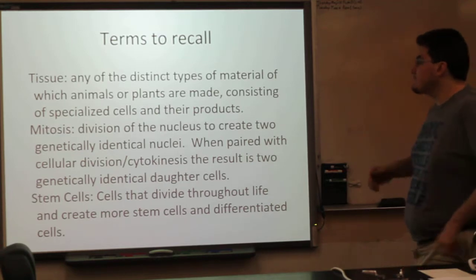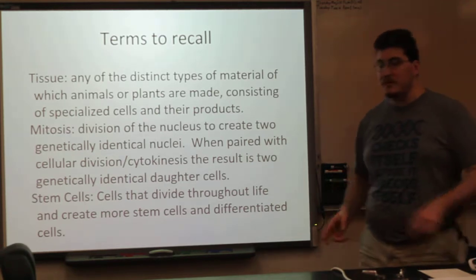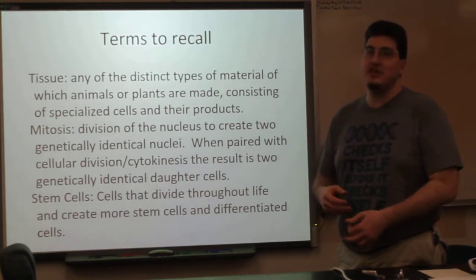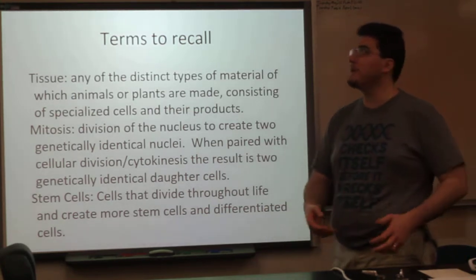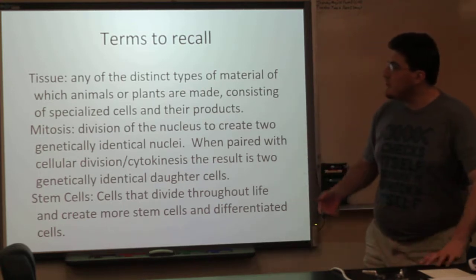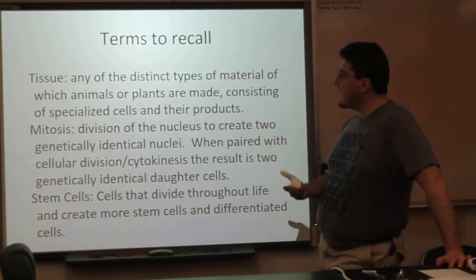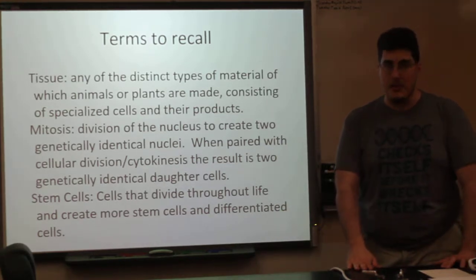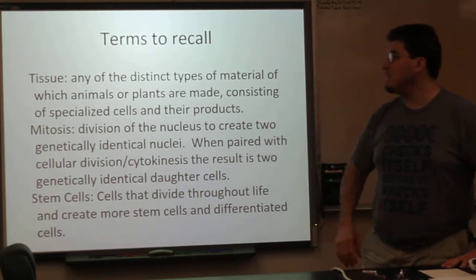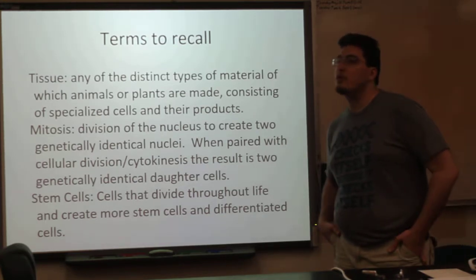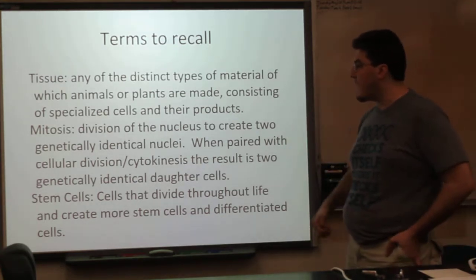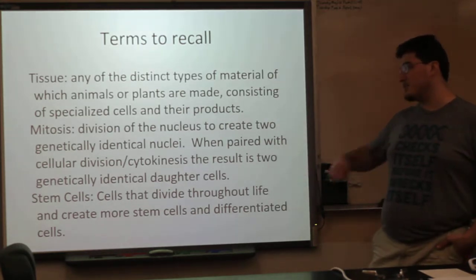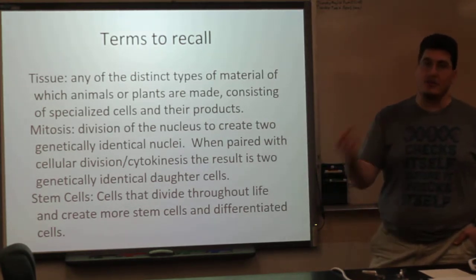Terms to recall from the foundational biology curriculum: a tissue is any of the distinct types of material which animals or plants are made of, consisting of specialized cells and their products. Mitosis is the division of the nucleus to create two genetically identical nuclei. When you pair mitosis with cellular division and cytokinesis, the result is genetically identical daughter cells.